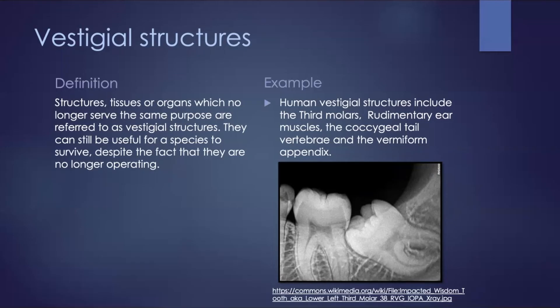Human vestigial structures include the wisdom teeth (the third molars), the rudimentary ear muscles, the coccygeal tail vertebrae, as well as the vermiform appendix. The third molar is a solid tooth that was used to eat hard food, such as raw meat. Once essential for an early human diet of fruits, leaves, meat and nuts, wisdom teeth are no longer necessary.